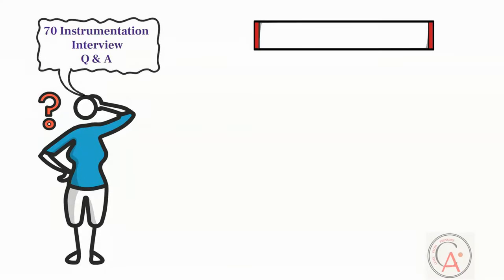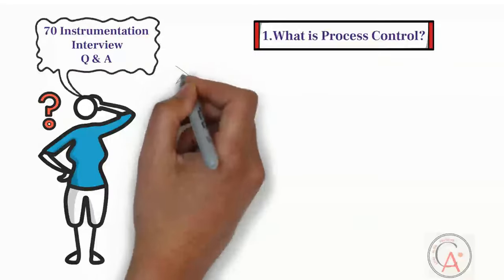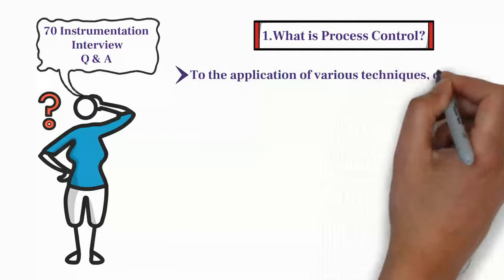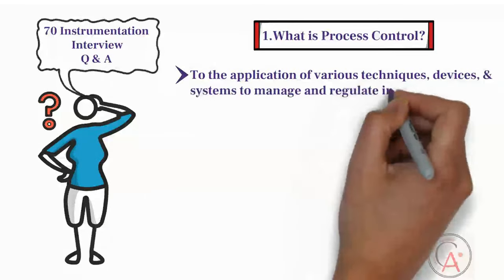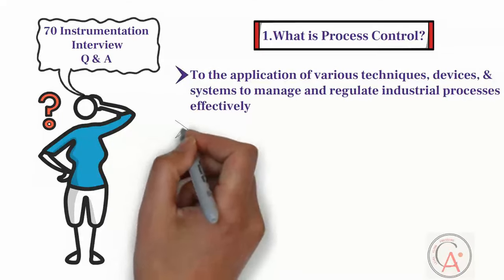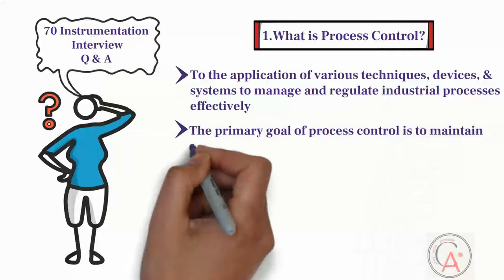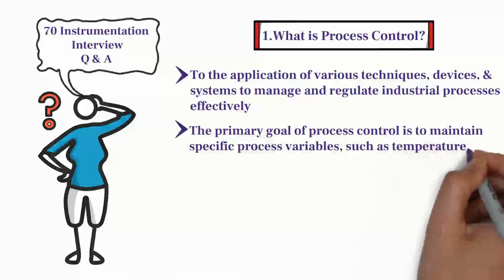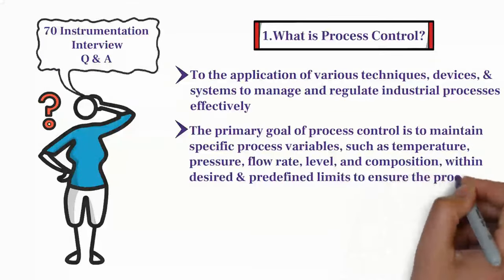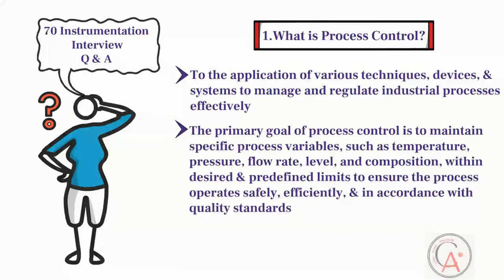The first question is: what is process control? Process control in instrumentation refers to the application of various techniques, devices, and systems to manage and regulate industrial processes effectively. The primary goal is to maintain specific process variables such as temperature, pressure, flow rate, level, and composition within desired and predefined limits to ensure the process operates safely, efficiently, and in accordance with quality standards.